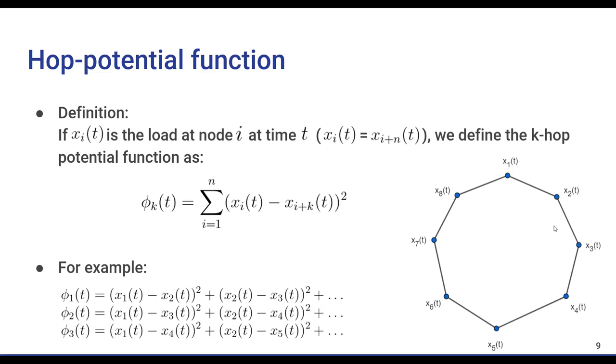The definition is simple. The k hop potential function is the sum of square differences of weights of nodes with a distance of exactly k. We will call the k hop potential function at time t phi_k(t).